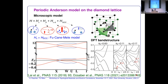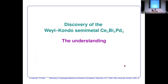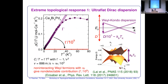Looking at the DFT band structure — density functional theory — there are Weyl nodes because the symmetry is present in the system. However, these nodes are very far away from the Fermi surface in the non-interacting case and could never give rise to the phenomena we observe.